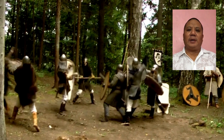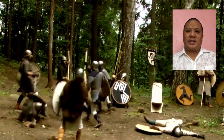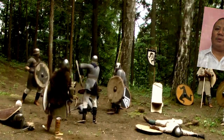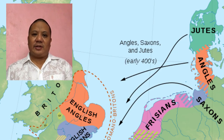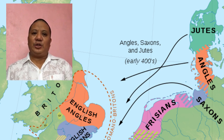Another people group migrated with them, the Jutes, but settled only in limited areas of what is now Britain. The Saxons came from the portion of land which is now northern Germany. The Jutes came from a region now mostly Denmark. Between the Jutes and Saxons was the land from which the Angles came.